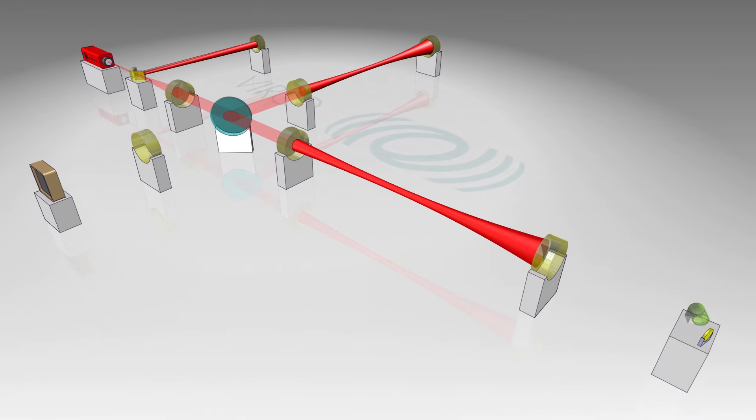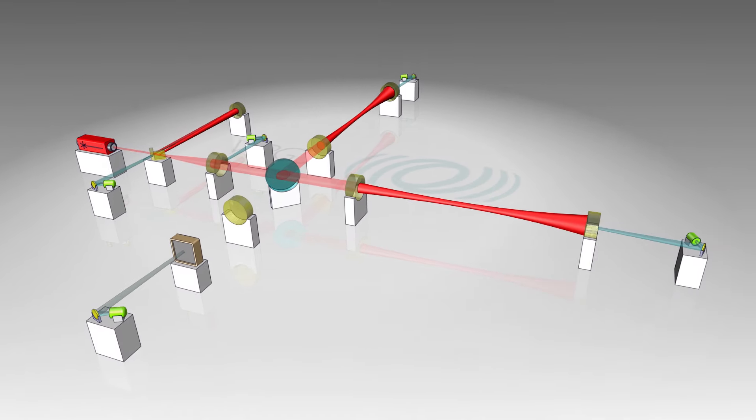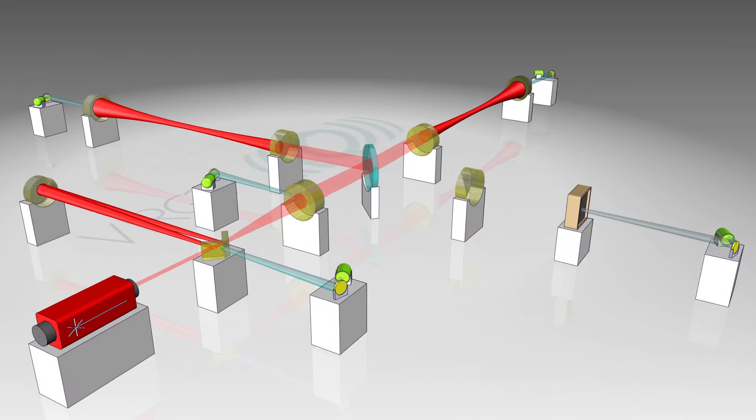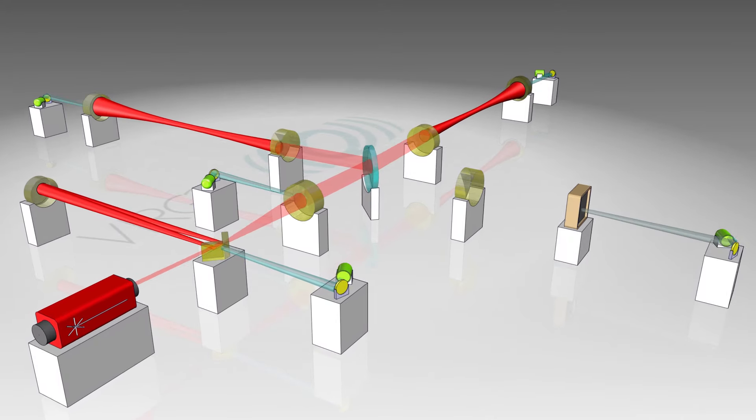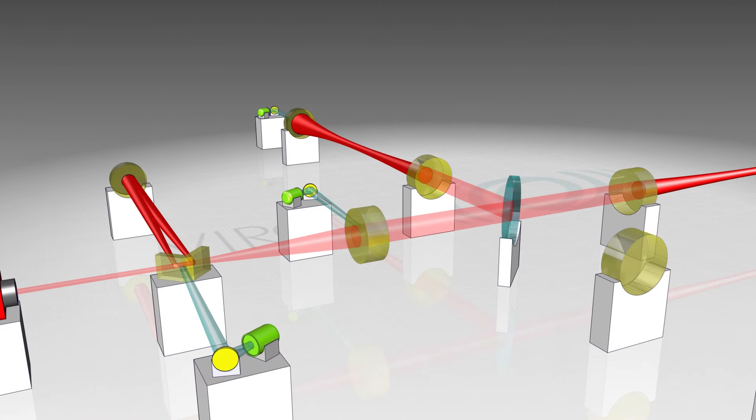Even more complex optics and electronics are required in order to keep the mirrors properly aligned and in position. Ground vibrations, at most about 100 nanometers, are nevertheless millions of times greater than the vibration caused by a gravitational wave.